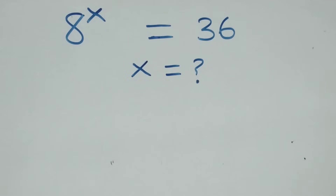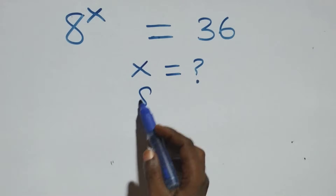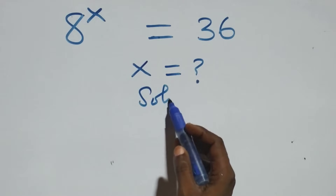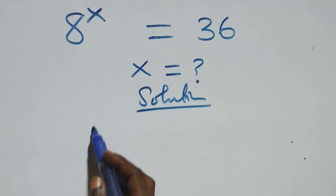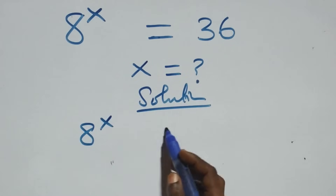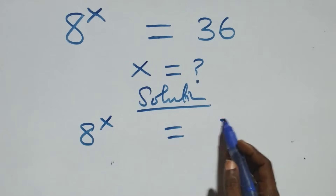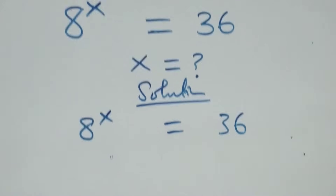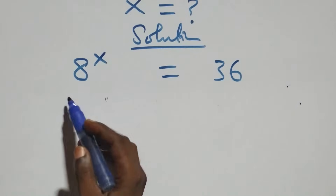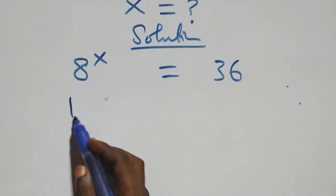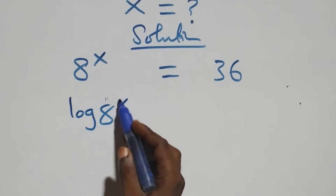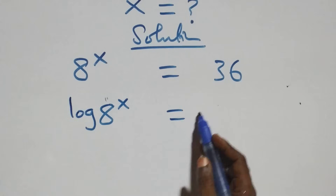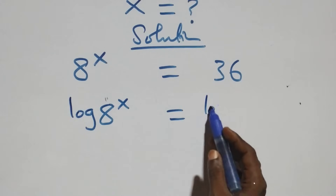Hello, you are welcome. We are going to solve this nice exponential equation. What we have here is 8 raised to power x equals to 36. We take the log on both sides: log of 8 raised to power x equals to log 36.